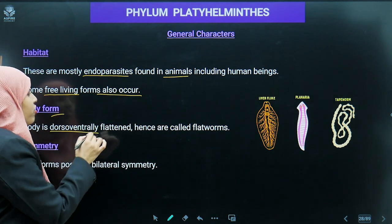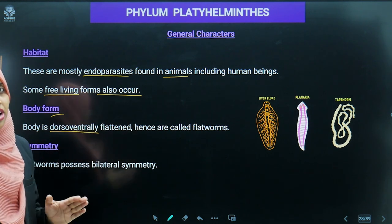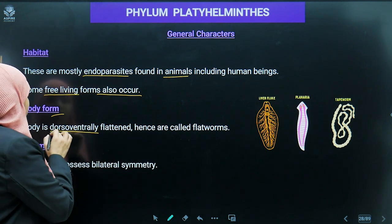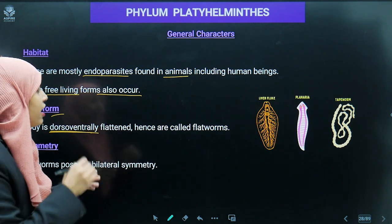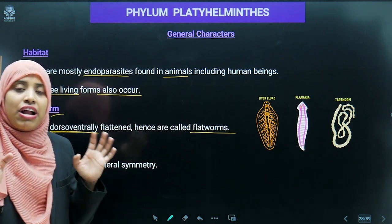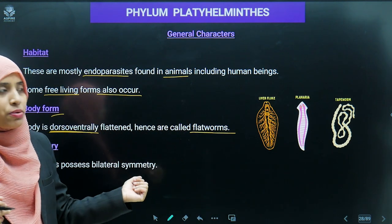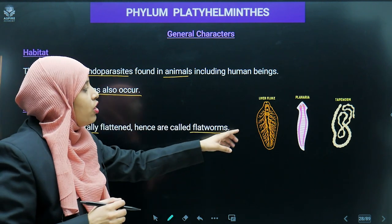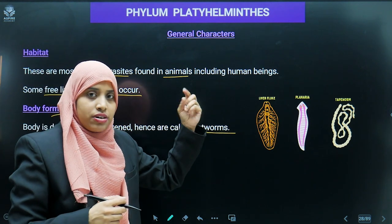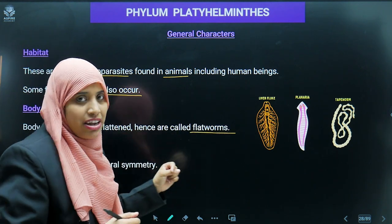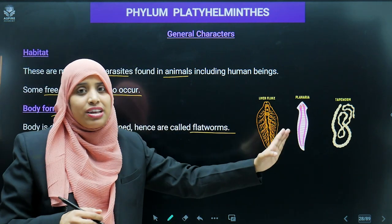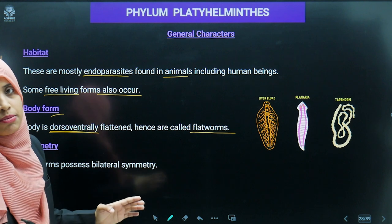Their body form is dorso-ventrally flattened — flat from both the dorsal and ventral sides — and hence they are known as flatworms. Examples include liver fluke, which is found in sheep, planaria, and tapeworm. All these belong to phylum Platyhelminthes.